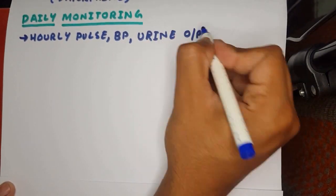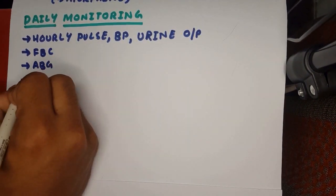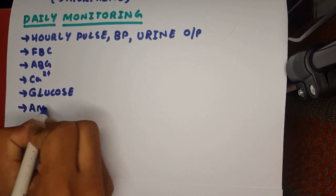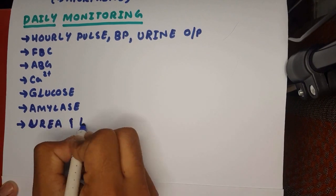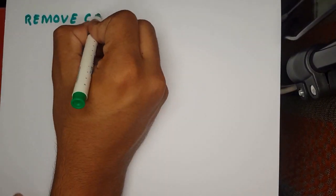In daily monitoring, hourly pulse rates, blood pressure, urinary output, full blood count, ABGs, calcium levels, glucose levels, U&Es, and urine electrolytes are to be monitored.